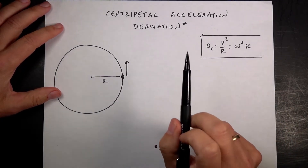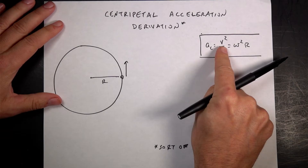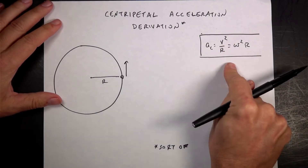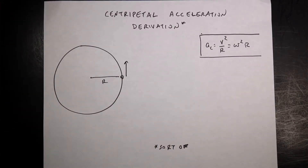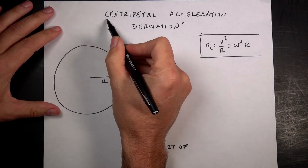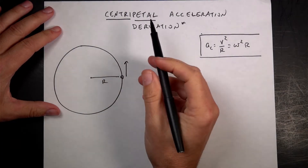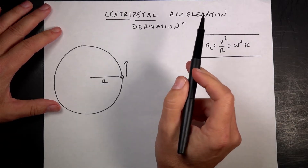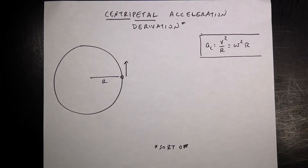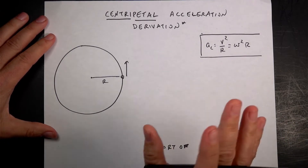Here's the derivation of the centripetal acceleration formula. If you're in introductory physics you see that centripetal acceleration is v squared over r, or omega squared r. I'm going to derive this for you — asterisk, sort of — so it's not a full derivation but it's pretty good. Be careful: centripetal means center-pointing, centrifugal means center-fleeing, pointing away. Those are two different things.